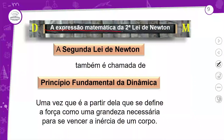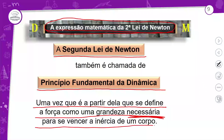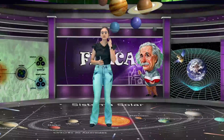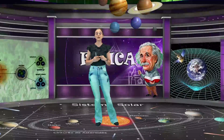Vamos ver a expressão matemática da segunda lei de Newton, que também é chamada de princípio fundamental da dinâmica. A partir dela define-se a força como grandeza necessária para vencer a inércia de um corpo. São forças aplicadas no corpo para vencer o seu estado de inércia — que está na primeira lei de Newton, a lei da inércia.